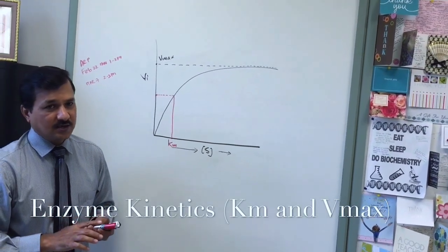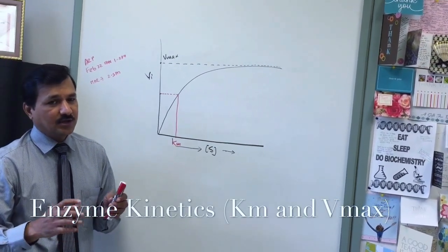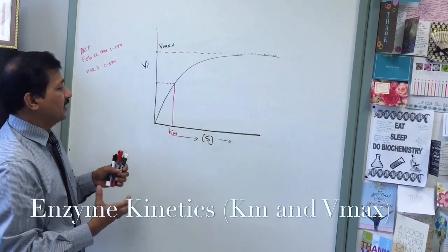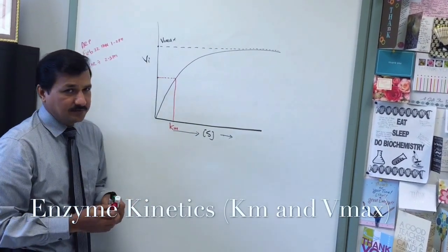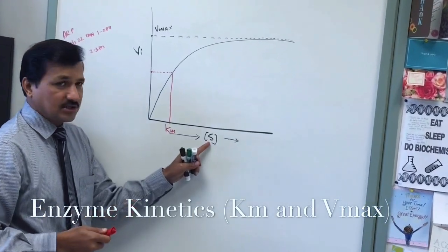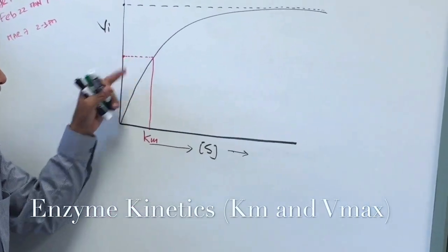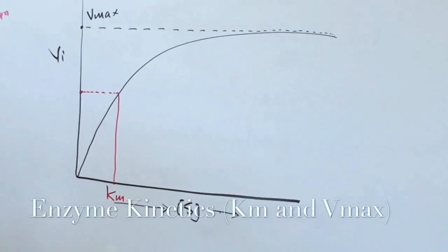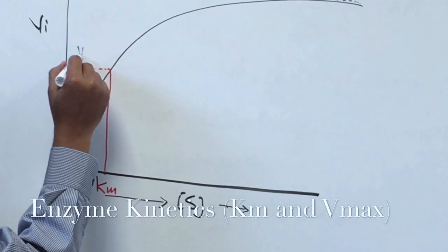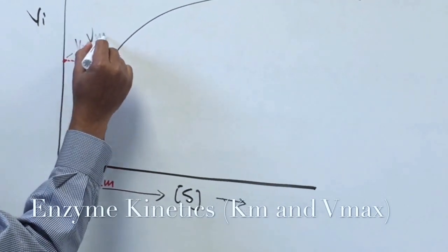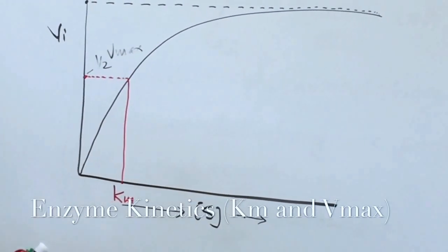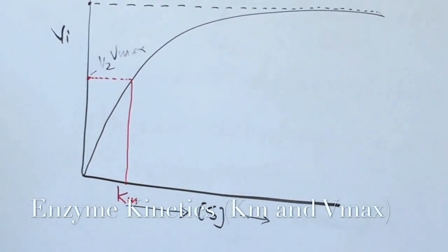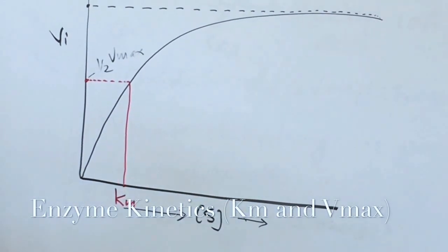KM is a signature of an enzyme for that particular substrate — it doesn't change. By definition, KM is the substrate concentration at which the enzyme reaches half of the maximum velocity, i.e., half Vmax.